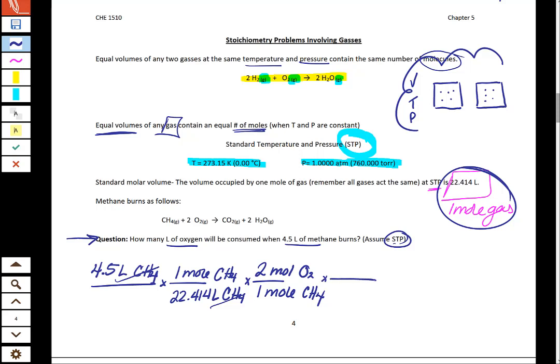And the question asks you for liters of oxygen, not moles of oxygen. So we need one more step where we say that in one mole of oxygen at STP, we're going to have 22.414 liters. So this is going to get you 9.0 liters of oxygen.